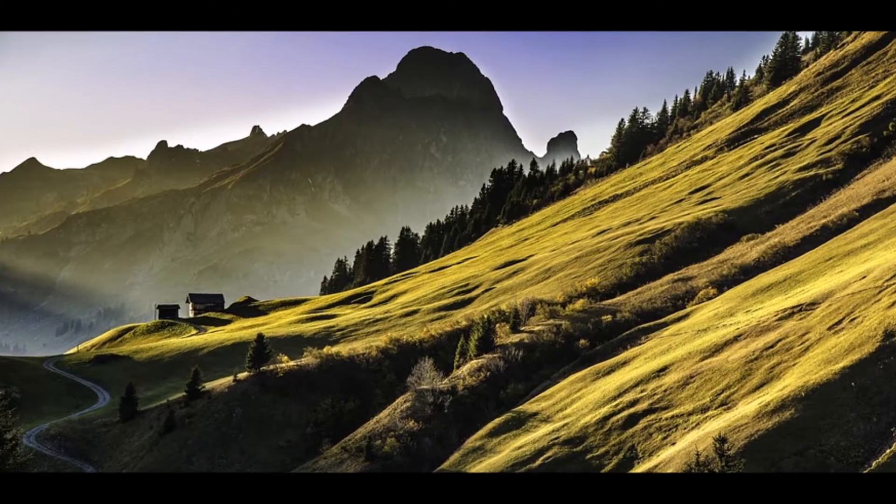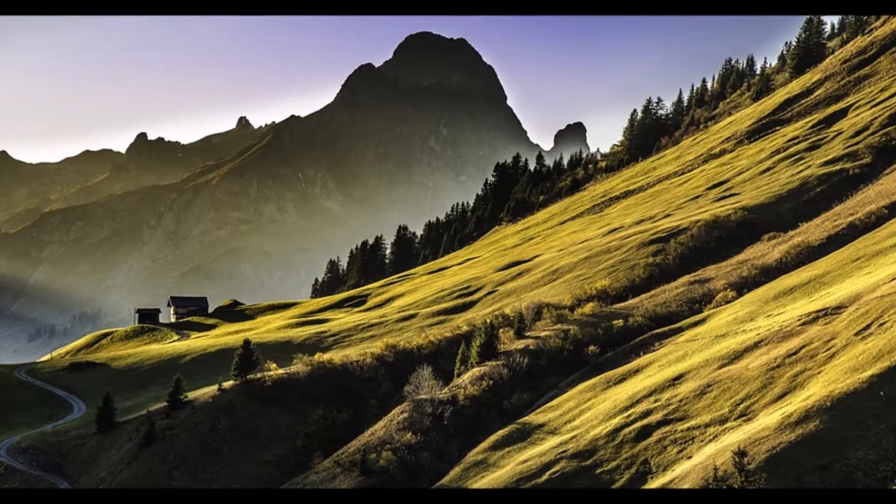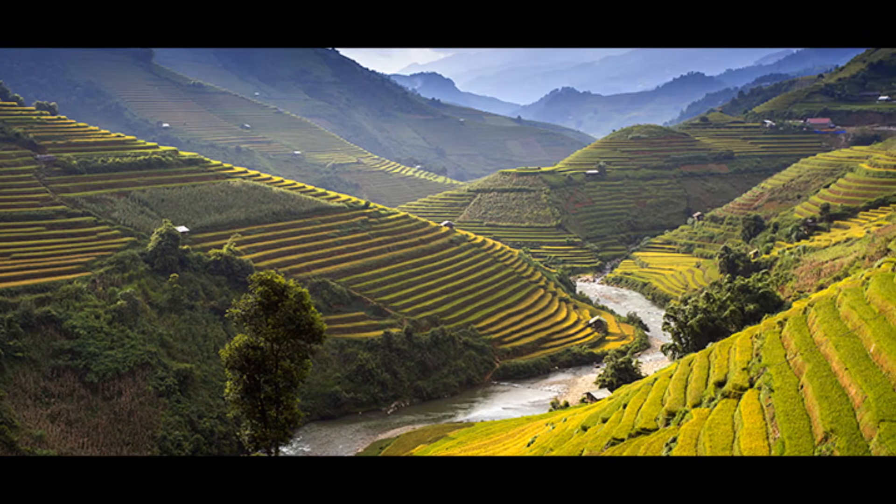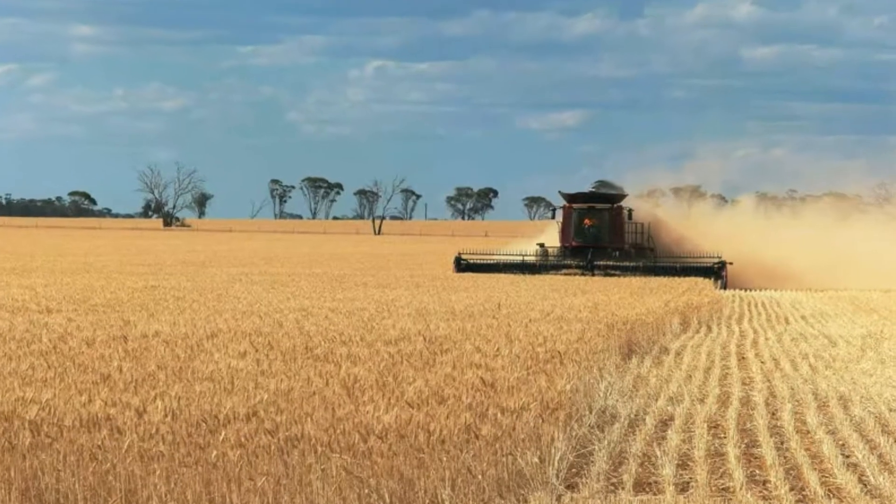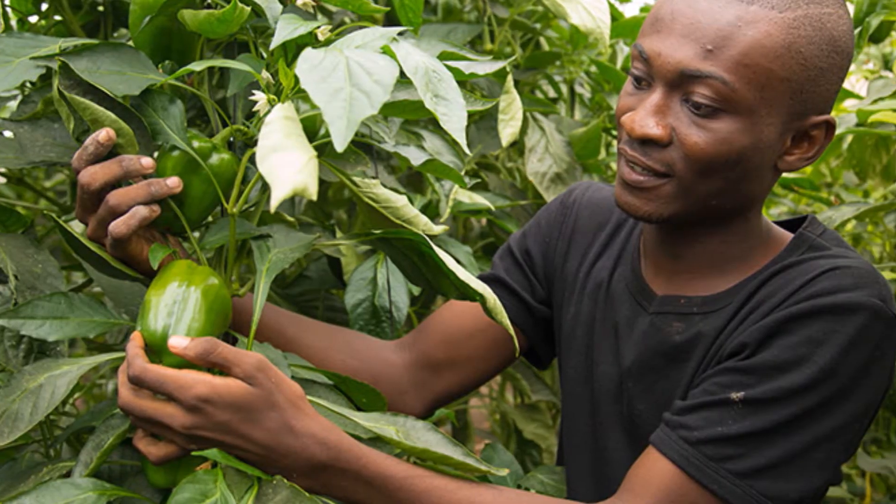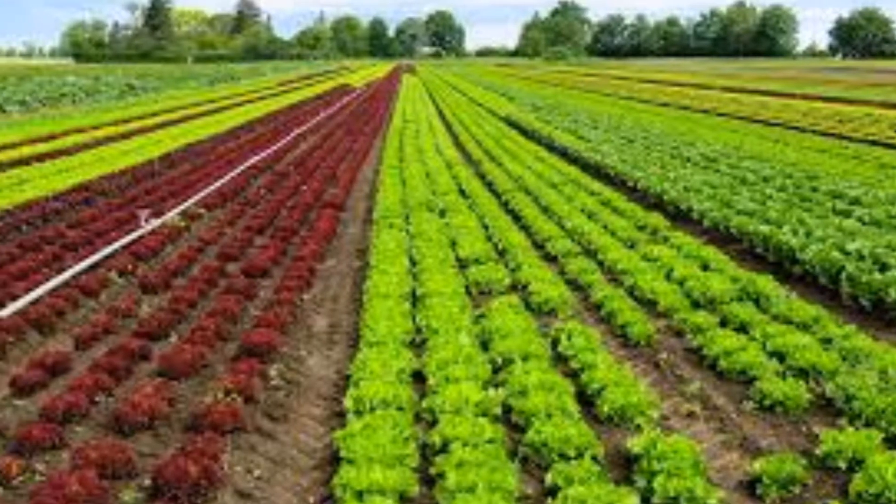We call soil the thin layer that sustains life on Earth. Most of our food resources depend on how we use it and how much we care about it, from the big wheat plains to the rice terraces to the horticulture production and all the vegetables that we all eat.